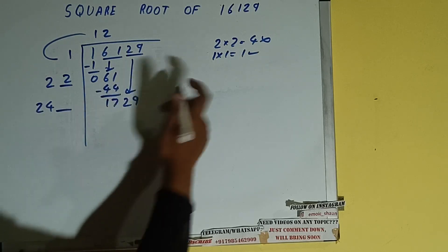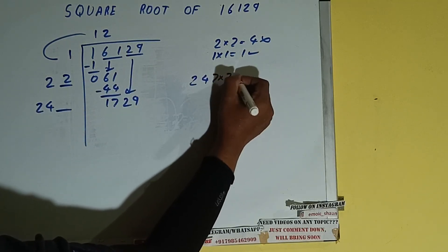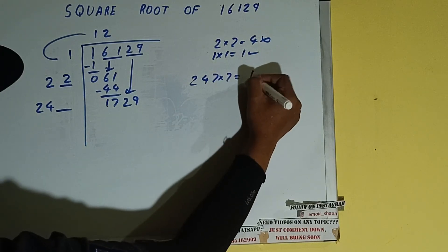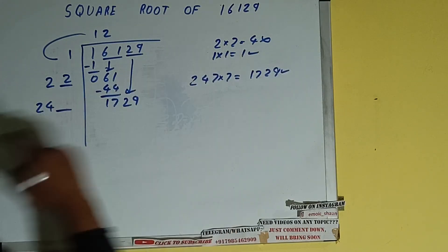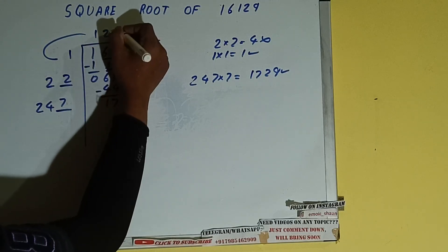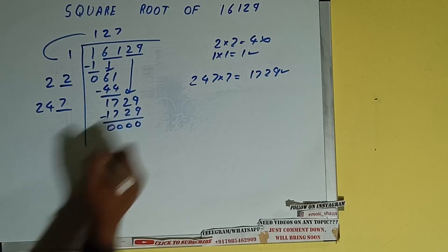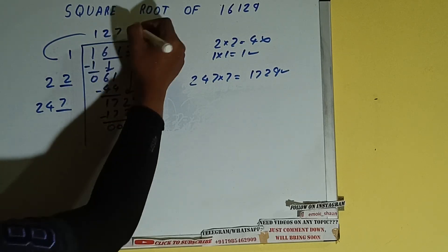247 times 7 we can try and it will be 1729 which is good to take. So 7 here and 7 here. 1729 minus 1729, 0 will be left.